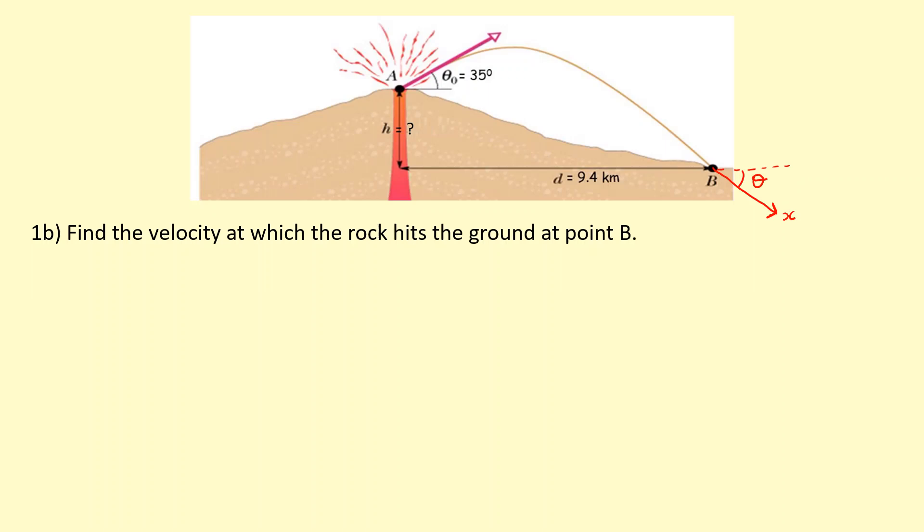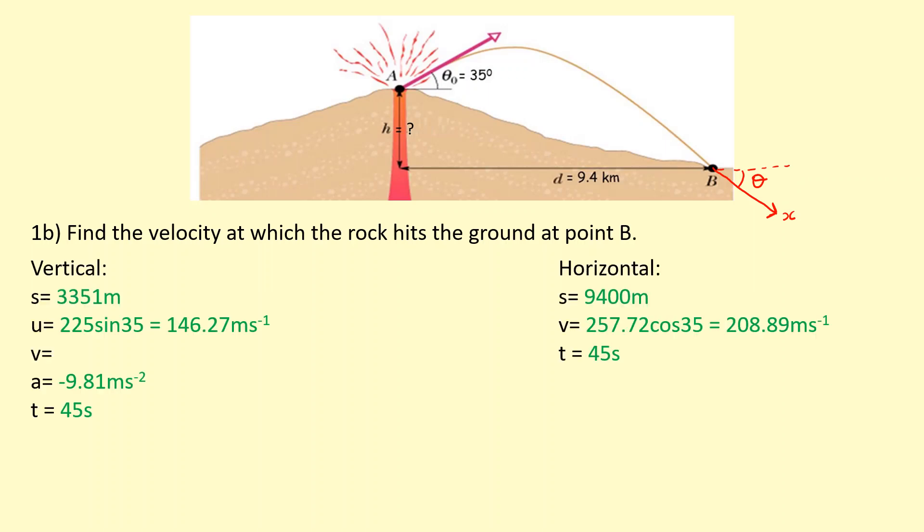Here's all the information from the last section that we did. We're going to use this. What we need now is a downward component of the vertical velocity. The horizontal component of the velocity hasn't changed at all because there's no air resistance, so it's still 208.89. But the vertical velocity is going to be different now, so we're going to have to find that using this information.